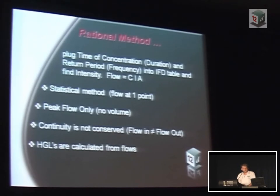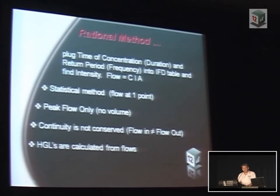The critical thing with the rational formula is it's a statistical method — it's only flow at one point, peak flow only. Continuity is not considered because it has the time of concentration as one of the components. If the area doesn't go up coincident with the increase in TC and therefore a decrease in intensity, our flows go down. So the flow going into one end of the pipe is different to the flow coming out of the other end of the pipe — that's just the rational formula.